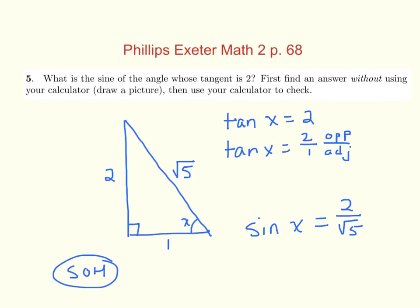So we multiply both numerator and denominator by root 5. Our final answer is 2 root 5 over 5, and that's good.